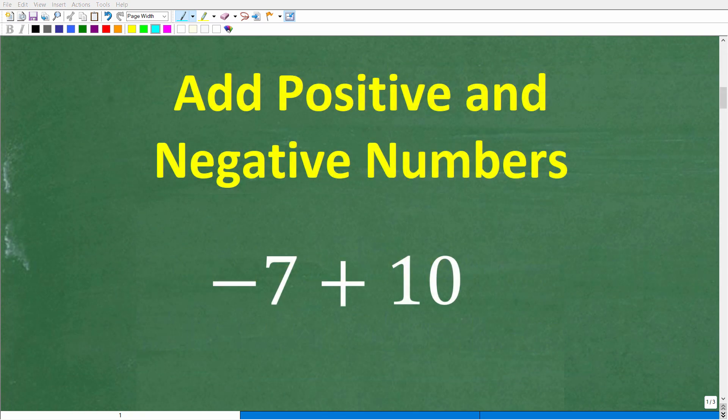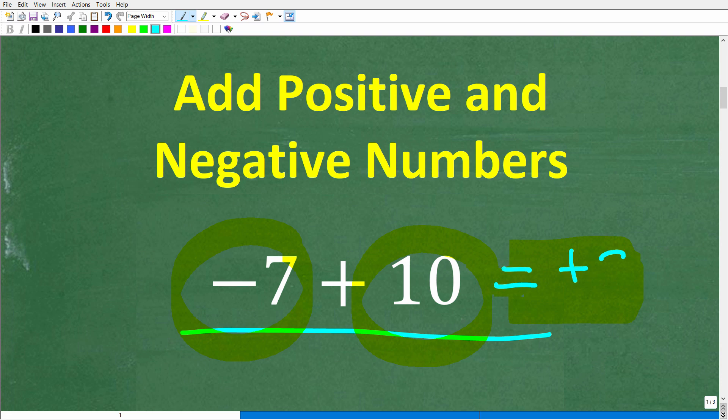Before I show you how to add positive and negative numbers, let's see how much you know with this simple example. We have -7 + 10. What is the answer? If you know the correct solution, go ahead and put that in the comment section. The right answer here is a positive 3.